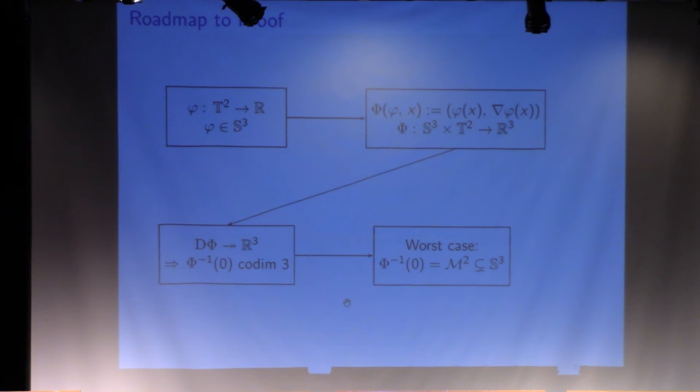We have a nice characterization of crossing points. We set up this formal function, capital phi, which consists of our original function and its gradient. Because the zeros of this function, where this function vanishes, is exactly where we have these crossings.